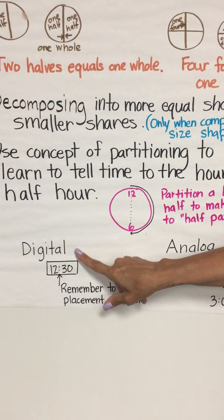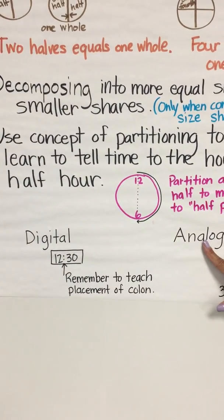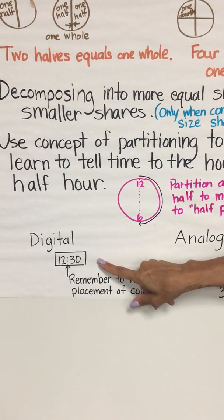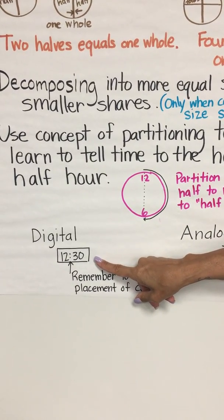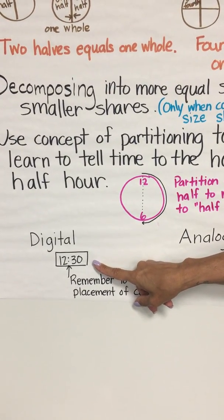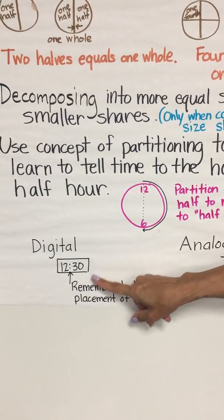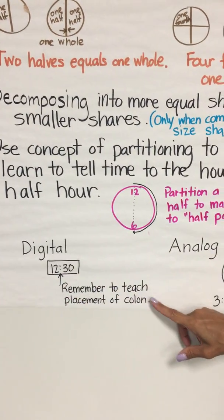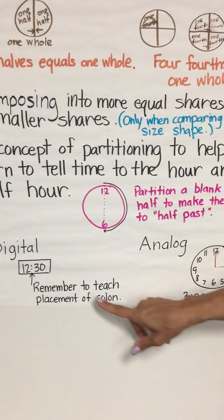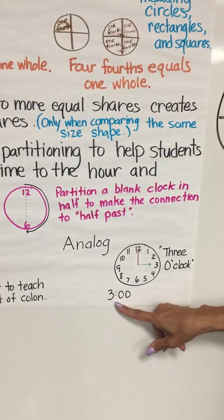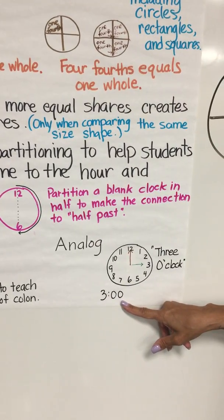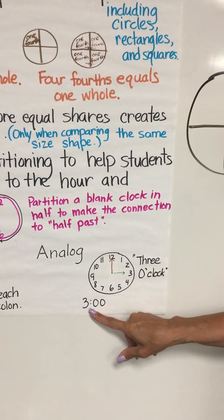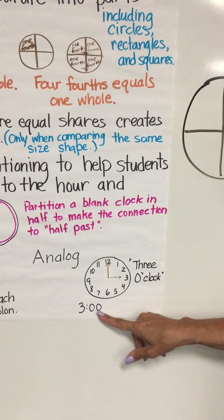The rest of this standard talks about digital and analog clocks. It is very important that students know where the placement of the numbers go, what the numbers mean, and what the colon represents. You also need to use the colon when teaching the students how to write time. So three o'clock is represented with a three, colon, and two zeros.